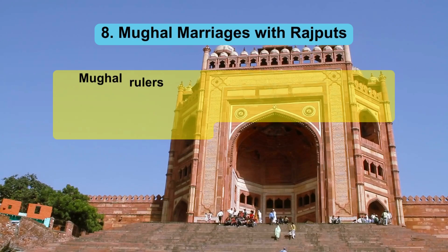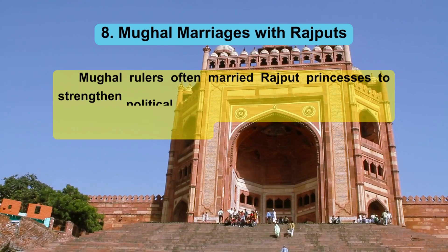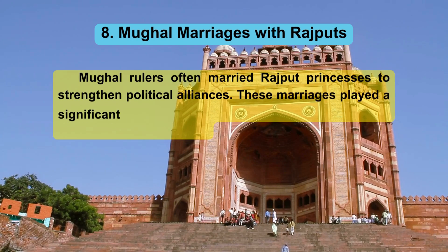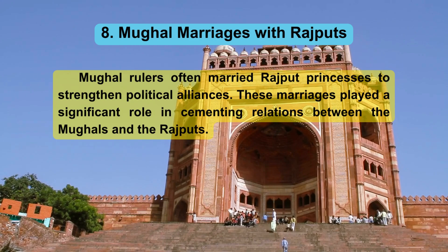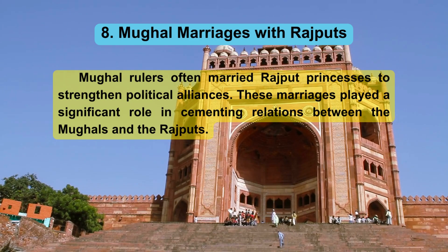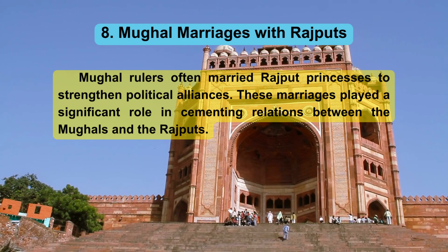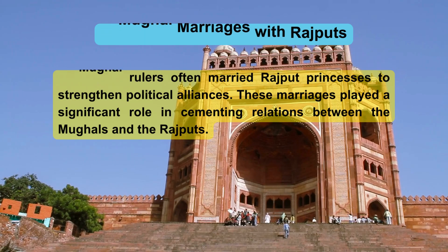8. Mughal Marriages with Rajput. Mughal rulers often married Rajput princesses to strengthen political alliances. These marriages played a significant role in cementing relations between the Mughals and the Rajputs.